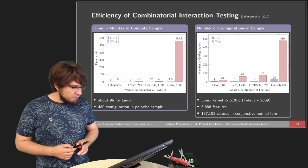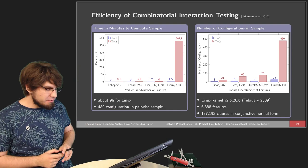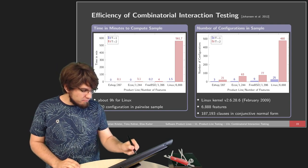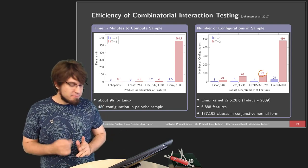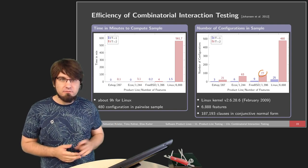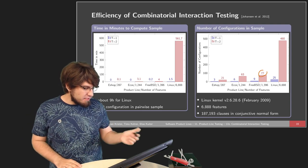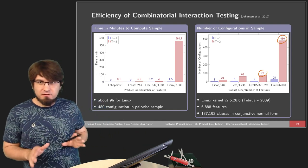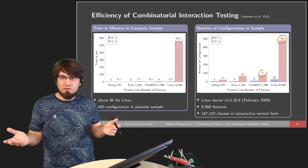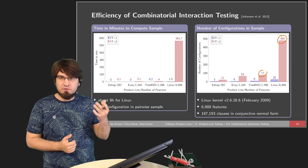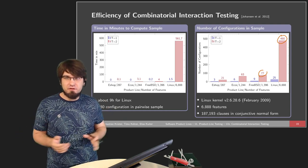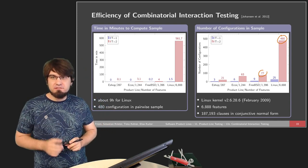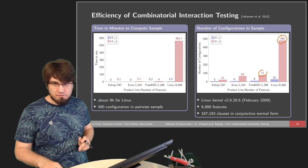For large real product lines, the pairwise sample sizes are still manageable: for FreeBSD with over a thousand features, we only need 77 configurations; for Linux, a pairwise sample requires 480 configurations. While 480 is quite a number, the actual number of valid configurations is uncountable, so having a concrete sample of 480 that guarantees every pairwise interaction is covered is a really nice property.